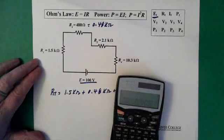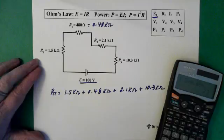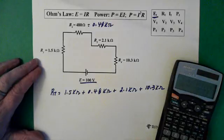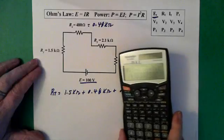When you're adding them up you don't have to worry about including kilo ohms in every one, you just have to add up the numbers. So 1.5 plus 0.48 plus 2.1 plus 10.3 equals 14.38 kilo ohms.